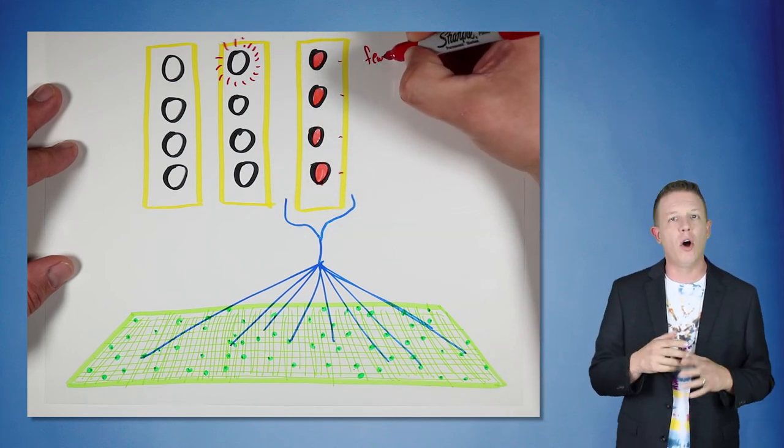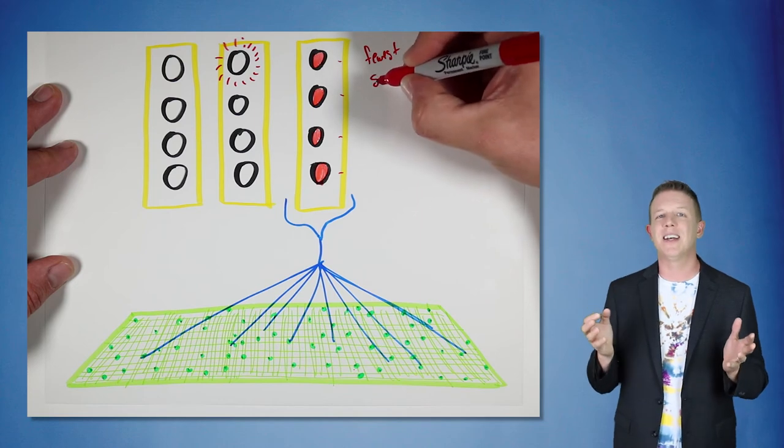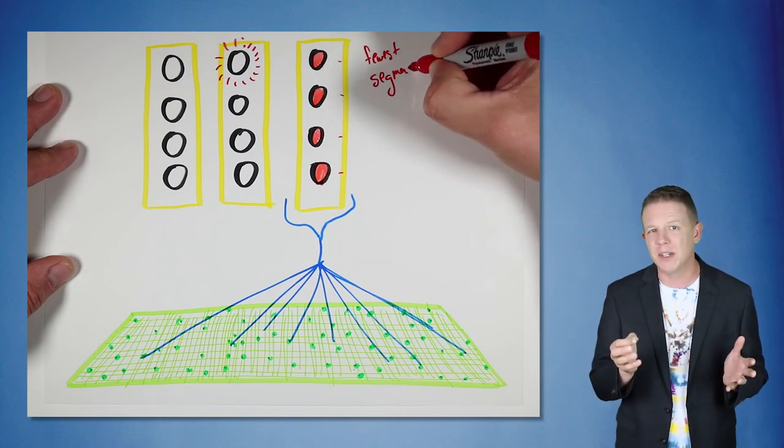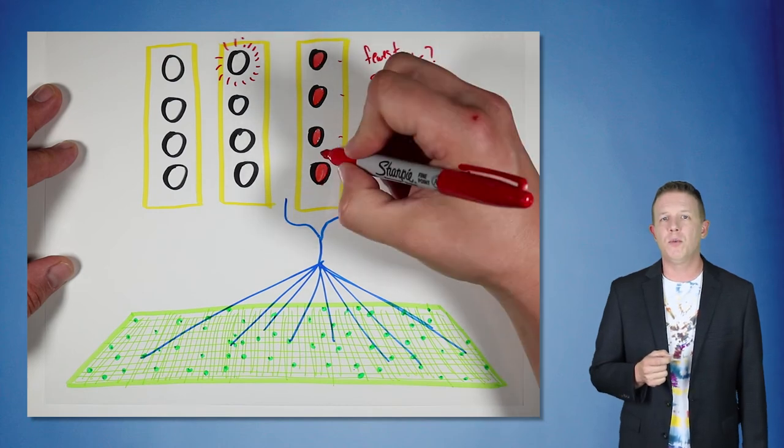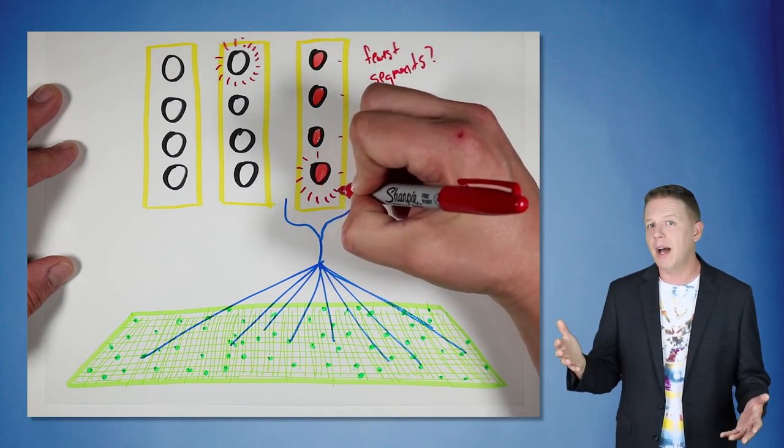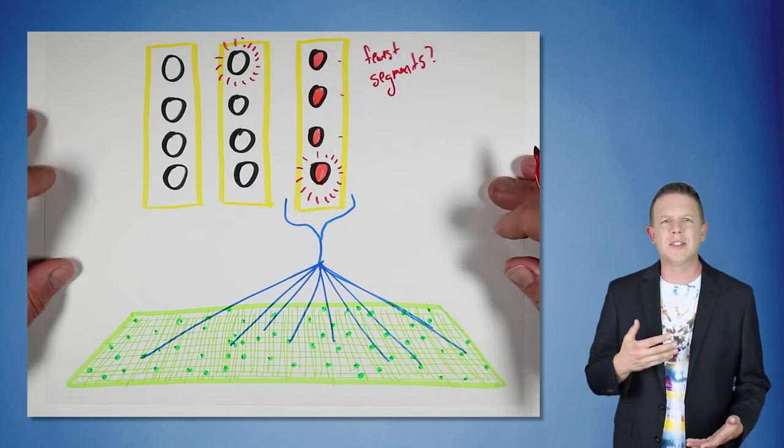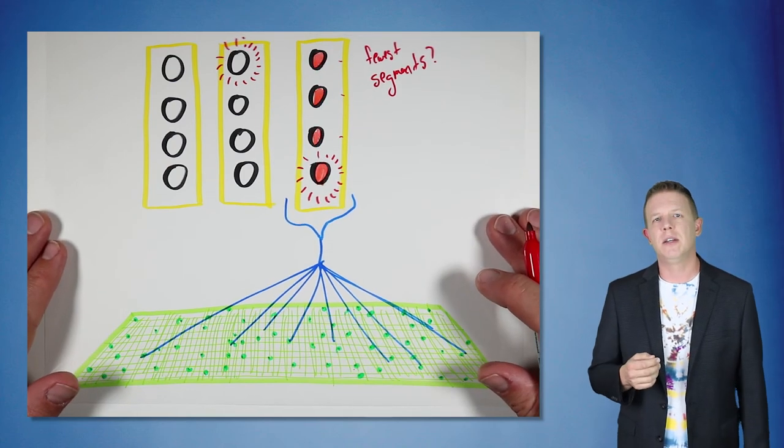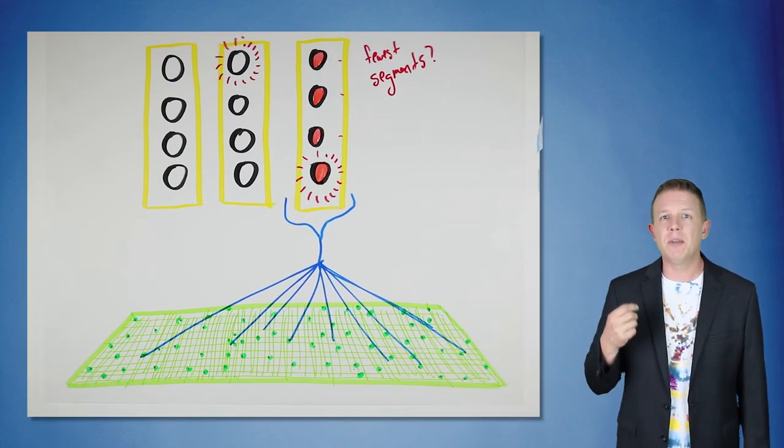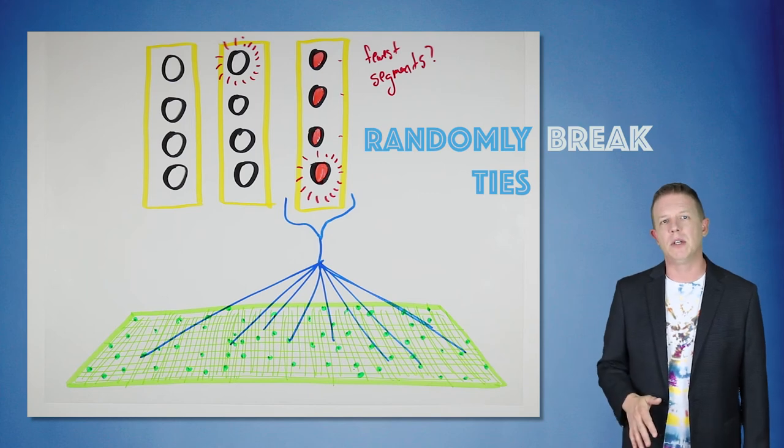In this case, we're going to inspect all the bursting cells to find the cell with the fewest number of segments and make that the winner cell. This ensures that we are utilizing as many cells as possible and not overloading cells with meaning unnecessarily. It's also important that we randomly break any ties that occur when finding this winner cell.